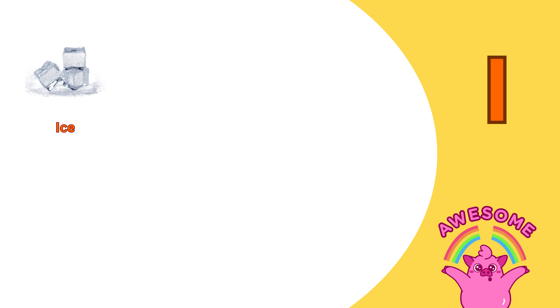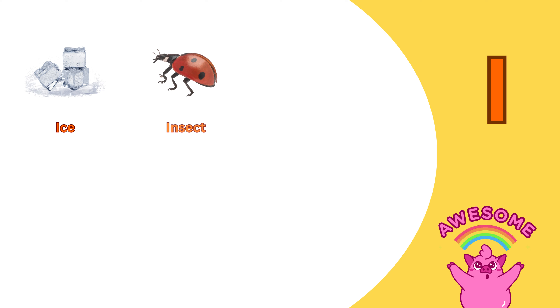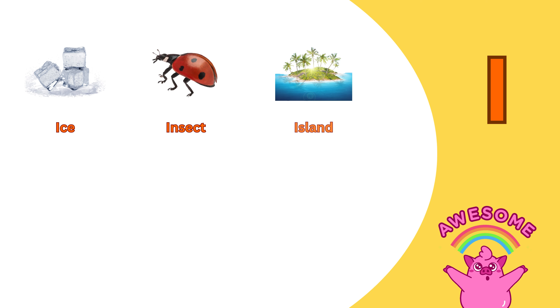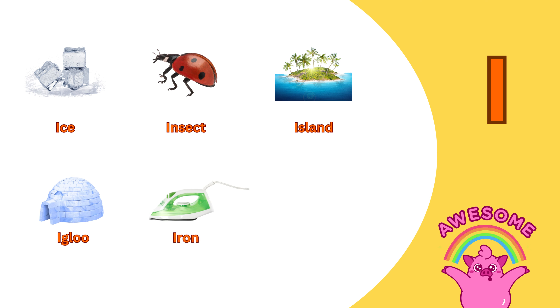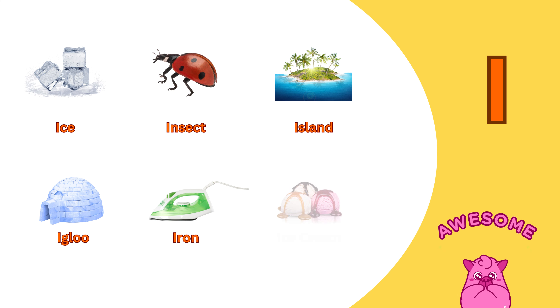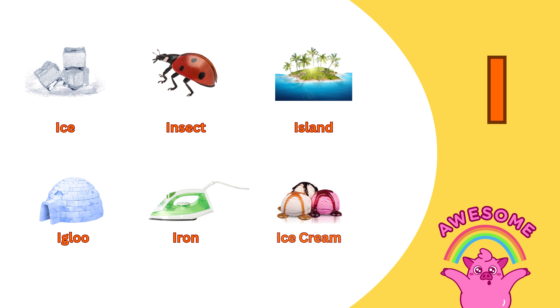I is for ice. I is for insect. I is for island. I is for igloo. I is for iron. I is for ice cream.